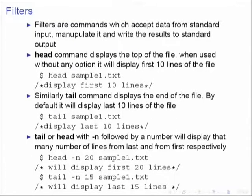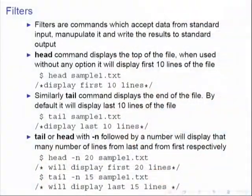The first simple command is head. The head command displays the top of the file. When used without any option, it will display the first ten lines of the file. Just type head sample1.txt and you will see the first ten lines on the terminal. Note that the definition of a line is one which ends with a newline character (\n). Similarly, there is the tail command to see the bottom ten lines — tail sample1.txt displays the last ten lines.